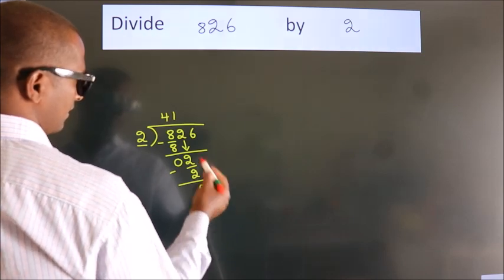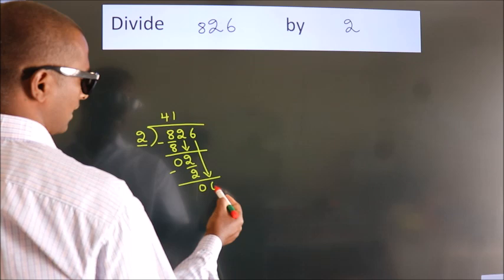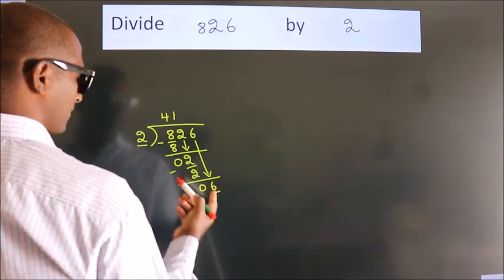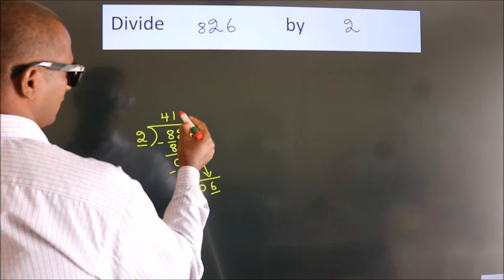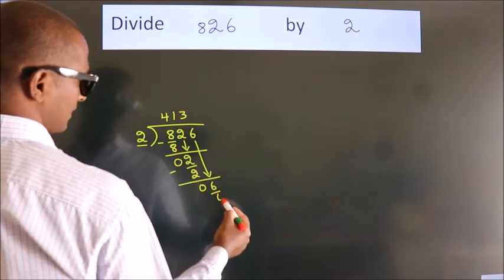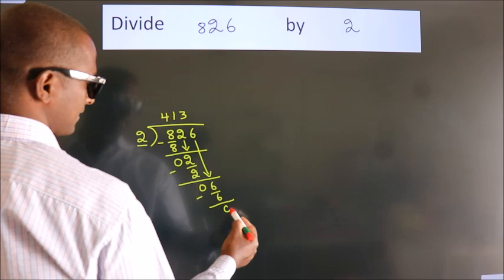After this, bring down the beside number, so 6 down, so 6. When do we get 6? In 2 table, 2 threes are 6. Now, we subtract, we get 0.